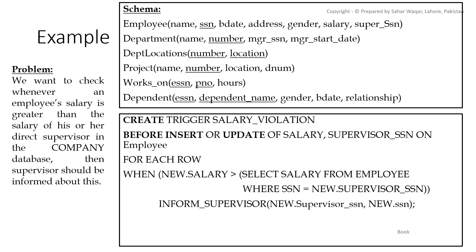We also have another example using a company schema with six tables: Employee, Department, Department_Locations, Project, Works_On, and Dependent. Employee contains name, SSN, address, gender, salary, and supervisor SSN. Department has name, id, manager SSN, and manager start date. Department_Locations has department locations. Project has name, number, location, and department number. Works_On has employee id, project number, and hours worked. Dependent contains information about employee dependents.